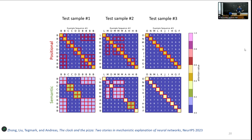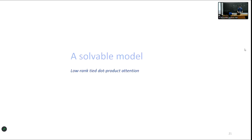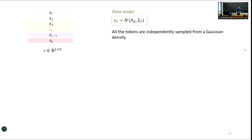To summarize: we have two different minima in the loss landscape corresponding to the model learning two different algorithmic ways of solving the same task — one semantic mechanism and one positional mechanism. We want to understand this deeper, so we move to a solvable model stripped of complexity but amenable to theoretical analysis, which we can precisely characterize in the asymptotic limit.